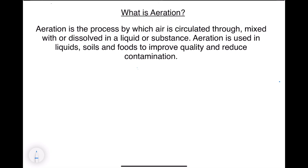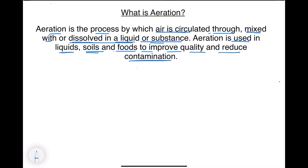The book definition: aeration is the process by which air is circulated through, mixed with, or dissolved in a liquid or substance. Aeration is used in liquids, soils, and foods to improve quality and reduce contamination. So we circulate, mix, or dissolve air in some liquids or substances to get better results.